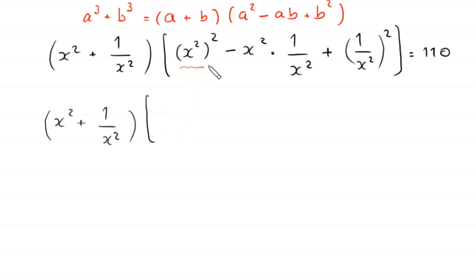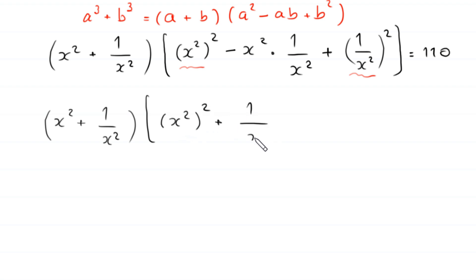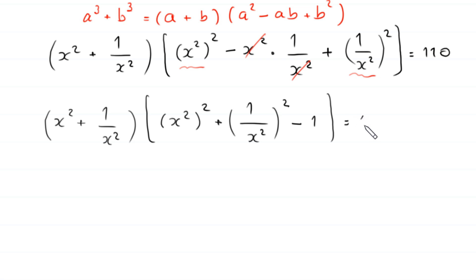Next, we combine the two terms (x²)² and (1/x²)². The middle term x² times 1/x² cancels to give negative 1, so we have (x² + 1/x²) times ((x²)² + (1/x²)² − 1) is equal to 110.